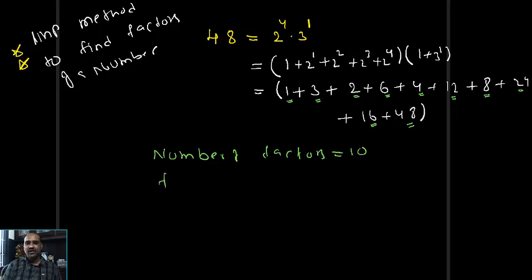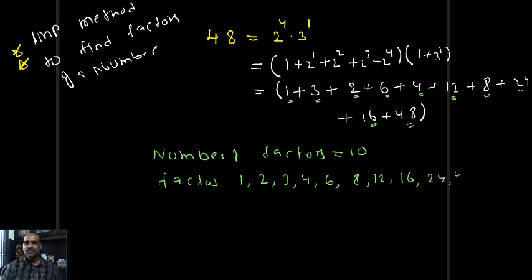The factors of 48 are: 1, 2, 3, 4, 6, 8, 12, 16, 24, 48 — that is 10 factors in total.